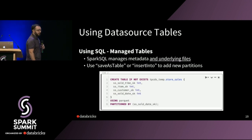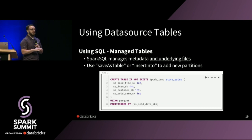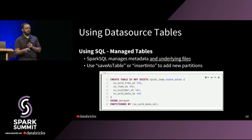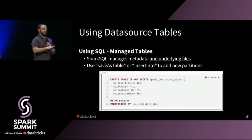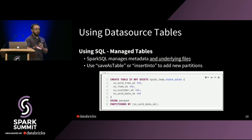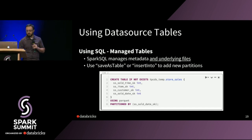A managed table is where Spark SQL manages both the schema, the metadata, and the underlying files. If you drop a partition or drop the table, it will actually remove the underlying files — that's the difference between managed and unmanaged tables. With an unmanaged table, you can drop partitions and tables without touching the underlying files. Hive also keeps track of the schema with managed tables, which is another good option for optimization.